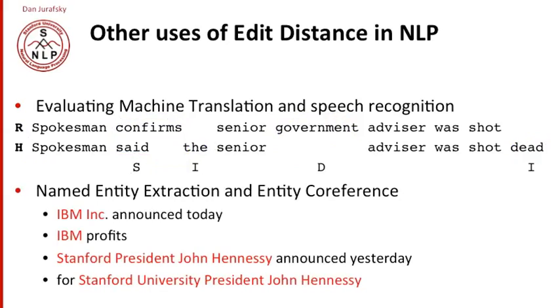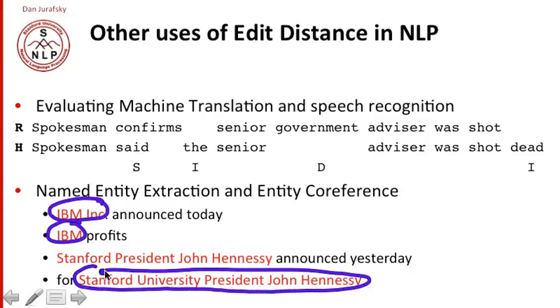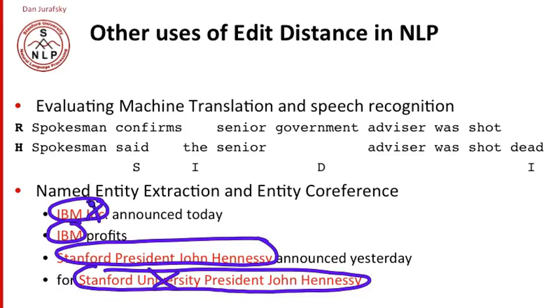Similarly, in tasks like named entity extraction, we're going to want to know if IBM, Inc and IBM are the same entity, or if Stanford University President John Hennessy is the same entity as Stanford President John Hennessy. And we can do that by using edit distance to notice that these are very similar with one word different, and here one word different. And so by measuring the number of words different, we can improve our accuracy at named entity extraction and other kinds of tasks.